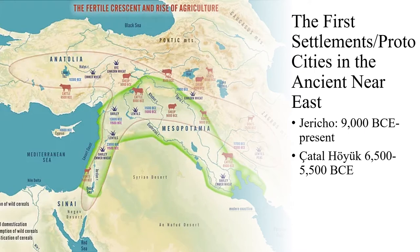In order to better understand ancient Greek and ancient Roman cities, we have to discuss the origins of cities and specifically how cities developed from the first sedentary agricultural settlements that emerged in the ancient Near East roughly 11 to 12,000 years ago. This map shows the two important regions in the ancient Near East that we're going to be discussing: Anatolia, including part of what is now Turkey, as well as Mesopotamia, including what is now Iraq, as well as parts of the Levant.